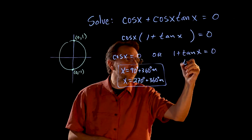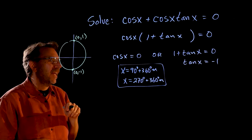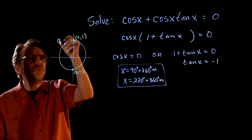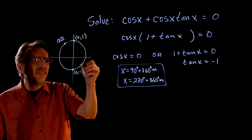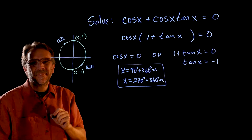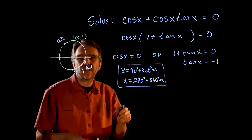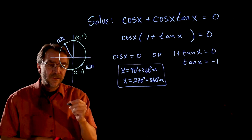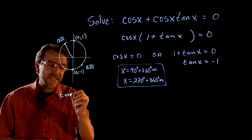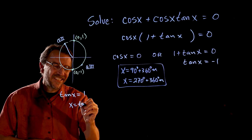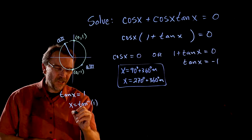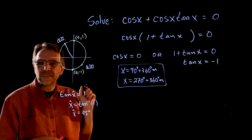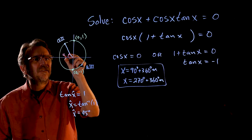Now let's look at this one. If we subtract 1, we'll get tangent x equals negative 1. And tangent is negative in Q2 and Q3. So we can work through the reference angle theorem. For tangent x equals negative 1, we can get the reference angle by looking at tangent x equals 1: x equals tangent inverse of 1, which is going to be the reference angle — we know it's going to be 45 degrees.